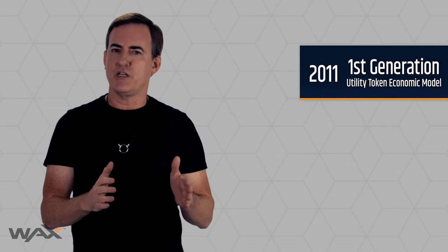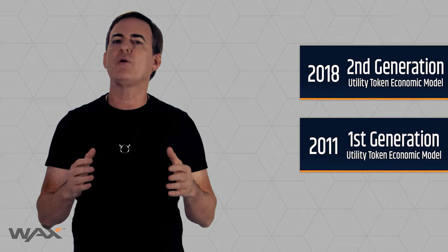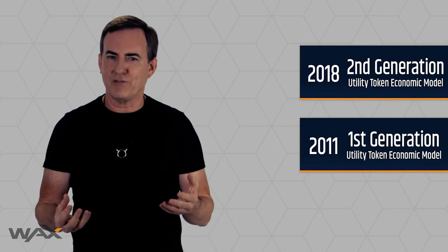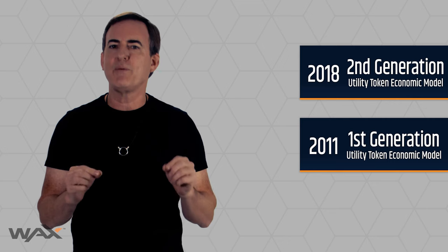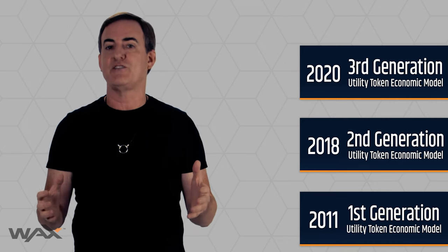One of the biggest changes we saw in the crypto markets in 2019 was the decline of the prevailing utility token model and the rise of a new one. We started seeing the transition from first generation to second generation utility token economic models, and in 2020, we will see the rise of third generation utility tokens.